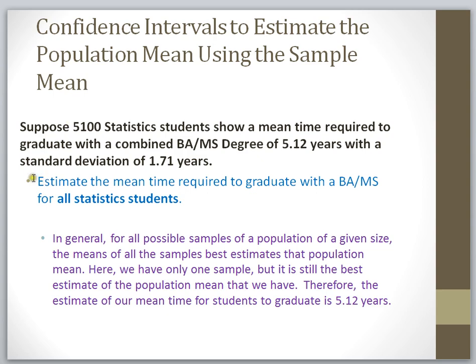The first question might be, estimate the mean or the average amount of time required for a general statistics student to graduate with this kind of dual degree called a bachelor's-master's. In other words, do I have a good estimate for all statistics students? Well, the only estimate that I have right now is in fact my sample mean. My sample size is pretty huge, and this is the only sample I have, and this is the mean of that sample. So right now, as it stands, my estimate for the mean time that it takes to complete this degree for all statistics students is my sample mean. So my sample mean is a good estimate of the population mean.